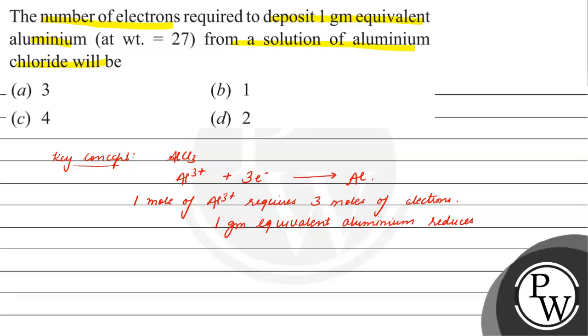...reduces, one gram equivalent of aluminium requires... Now, one gram equivalent of aluminium has molar weight 27 and n-factor is 3.